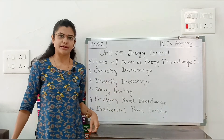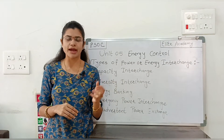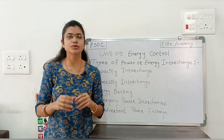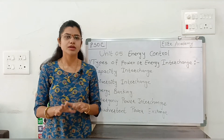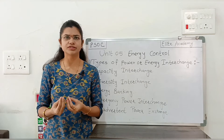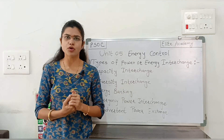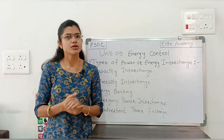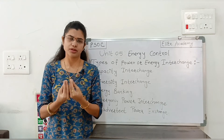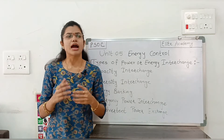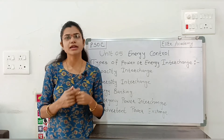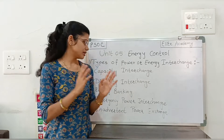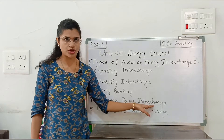The third type is energy banking. The name itself indicates one party is the banker and one is the depositor, but it totally depends on who is buying and who is selling. For example, consider a hydro system and a thermal system. During a high water runoff period, the hydro plant generates more energy and sells it to the thermal plant. During a low water runoff period, the hydro plant buys energy from the thermal plant.